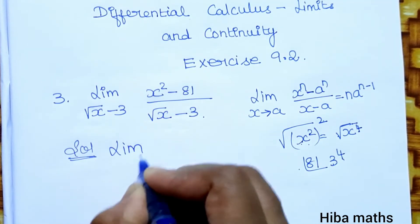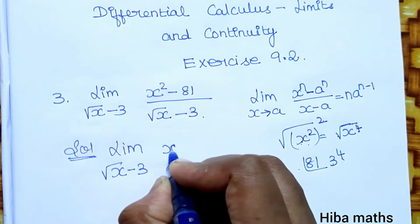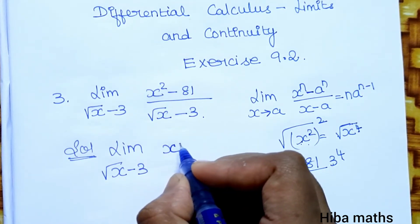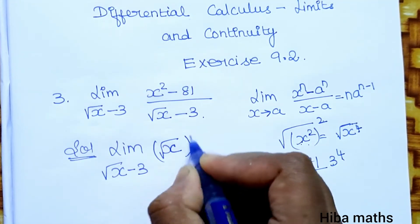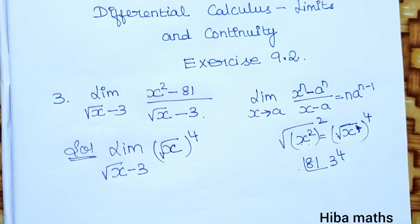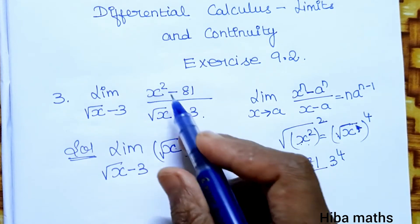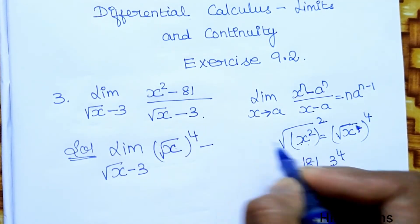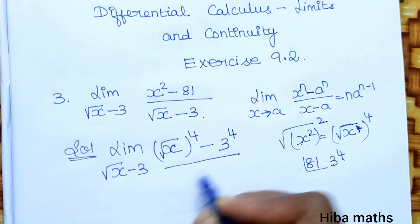Now the question is about limit root x minus 3: x square, x power 4, or root 4 is whole power 4. Now inside, power 4 is equal to 2, 1 by 2, 1 by 2 will cancel x square minus 81, 3 power 4, divided by